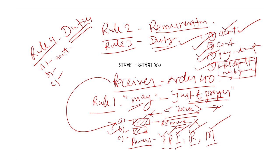Jab yeh pay karne mein fail kar jaata hai — yahan isko pay karna tha, aur yeh pay nahi karta hai — toh phir court isko bound karegi ki aap isko pay karo court mein. Kyunki aap isi liye ho ki aap account maintain karo ge, aur jo paisa aap receive karo ge, woh court mein pay karo ge. Toh aap kyun nahi pay kar raha hai — toh iski liye court isko baat deh kar sakti hai. Aur tisra hai: agar yahan willful default or negligence karta hai.